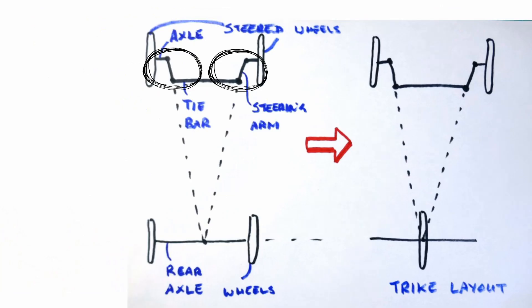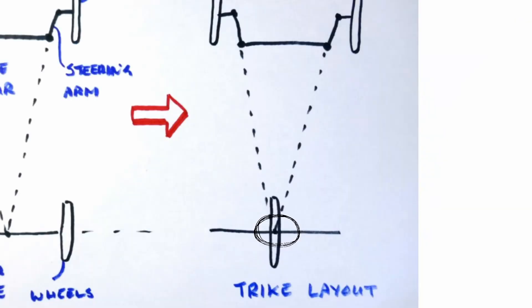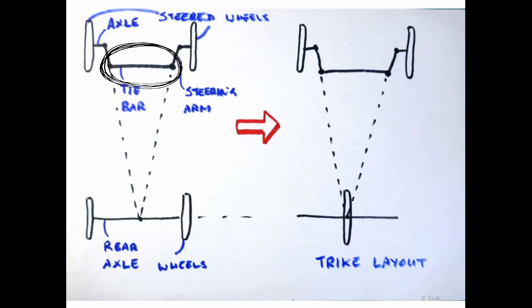Ackermann geometry says that the steering arms must be aligned with a line drawn between the steering pivots and the centre of the vehicle's rear axle or the centre of the rear wheel in the case of the trike. The ends of the steering arms are joined by a single linkage.